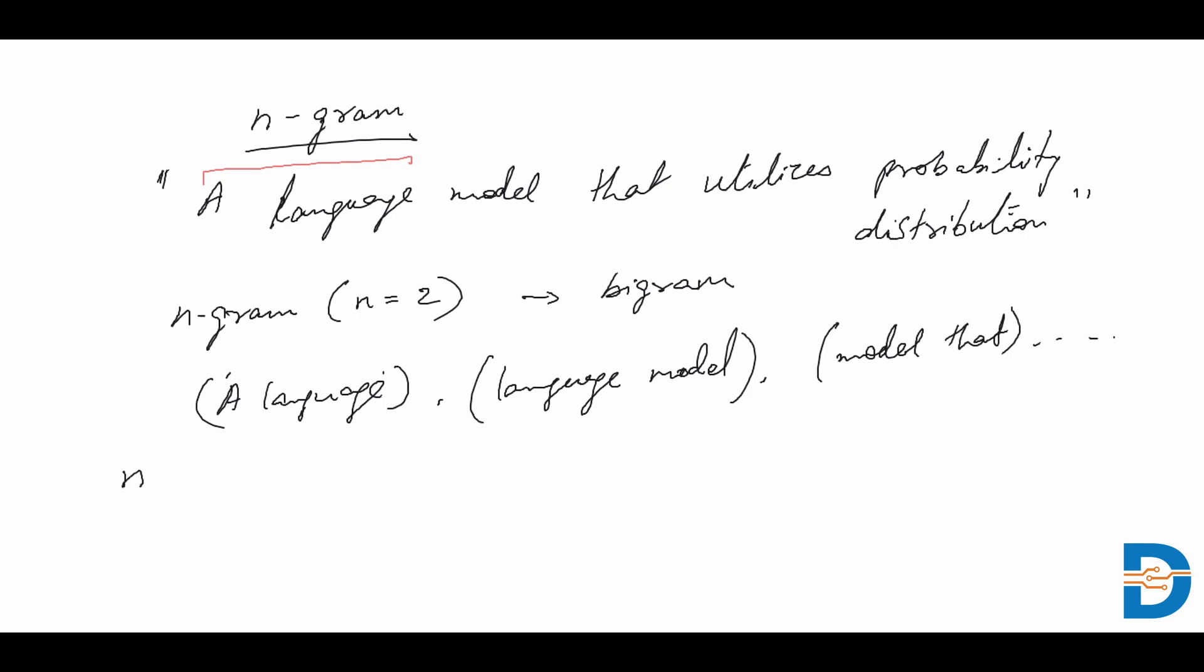So we could define the N-gram essentially as a contiguous sequence that may be dealing with words. They could also be letters, characters, syllables, and so on.